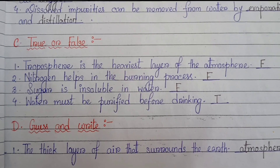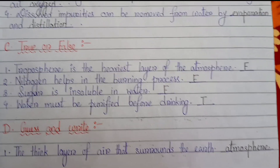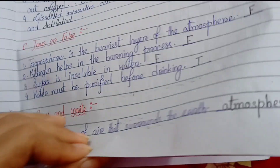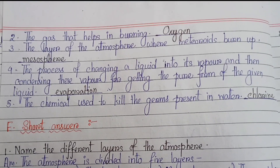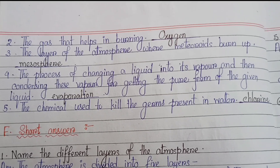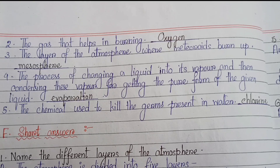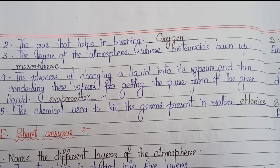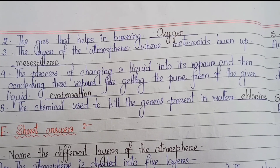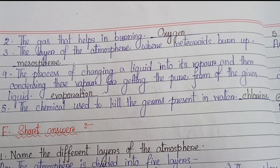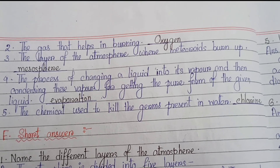Number 4: water must be purified before drinking. Next, Number D: Gaze and Write. Number 1: the thick layer of air that surrounds the earth — atmosphere. Number 2: the gas that helps in burning — oxygen. Number 3: the layer of the atmosphere where meteoroids burn up — mesosphere. Number 4: the process of changing a liquid into its vapor and then condensing this vapor to get the pure form of the liquid — evaporation. Number 5: the chemical used to kill germs present in water — chlorine.